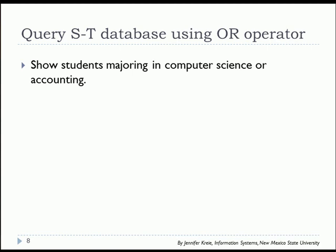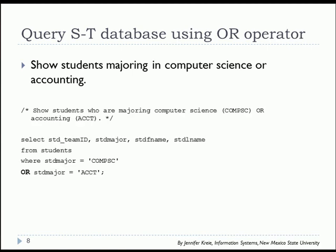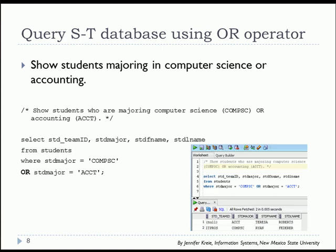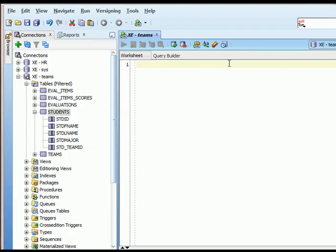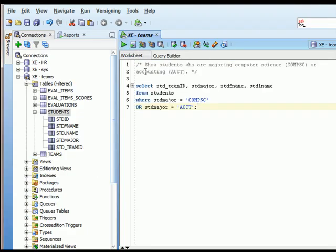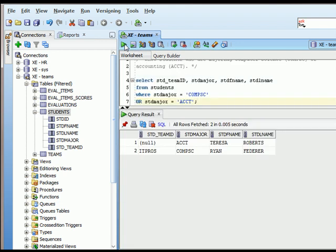Now we're going to ask: which students are majoring in computer science or in accounting? The SQL selects the columns we want from the students table where student major equals computer science or student major equals accounting. We get a result showing that Teresa and Ryan are either in computer science or in accounting. Let's try running that in SQL Plus — and we get the same result that was shown in the PowerPoint slide.